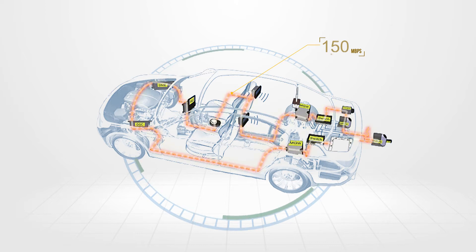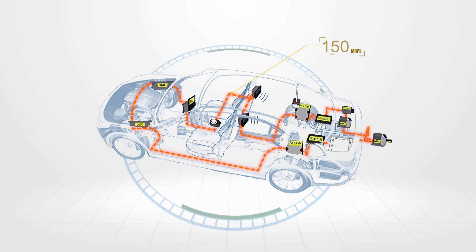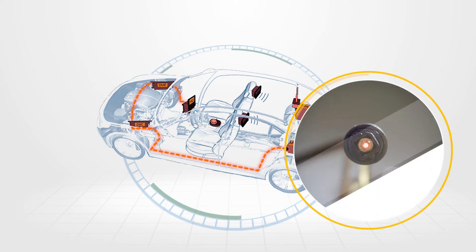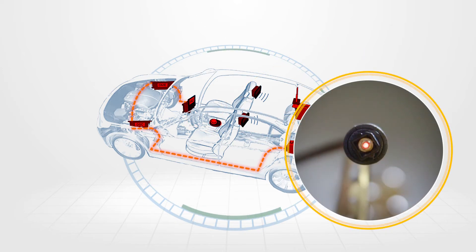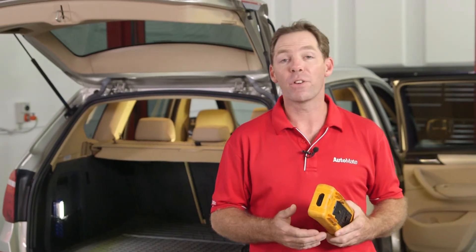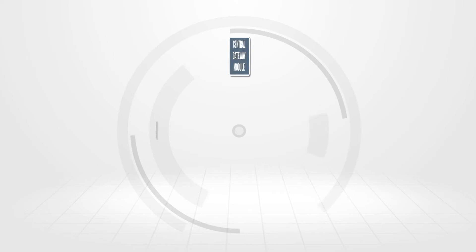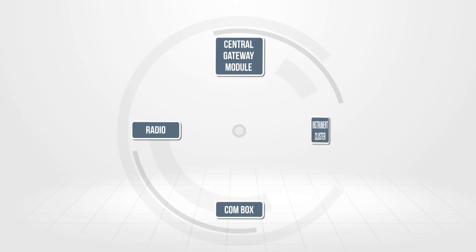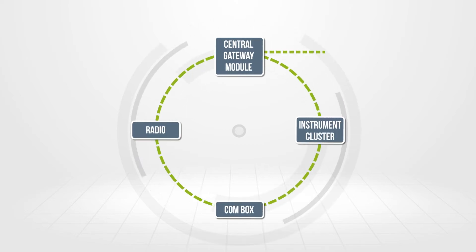For a networked global positioning or digital video system to work correctly, the network must be fault tolerant. But unlike a copper wire-based connection, the optical fiber network can cause problems or DTCs due to light signal clarity. Apart from testing voltage supplies and grounds, a multimeter is not much use when diagnosing an optical bus network.